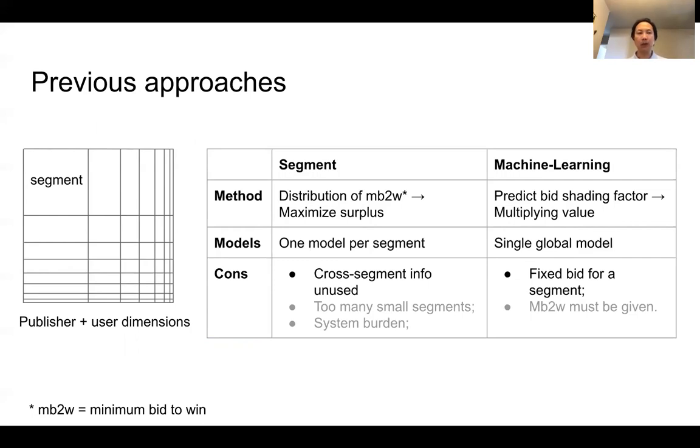We define the segment as the bid data for fixed publisher and user dimensions. The segment approach looks at these segments individually and estimates the distribution within each segment, then tries to find the bid price that maximizes the expected surplus. The significant drawback of this approach is that the segments are treated separately. Cross segment information is not used.